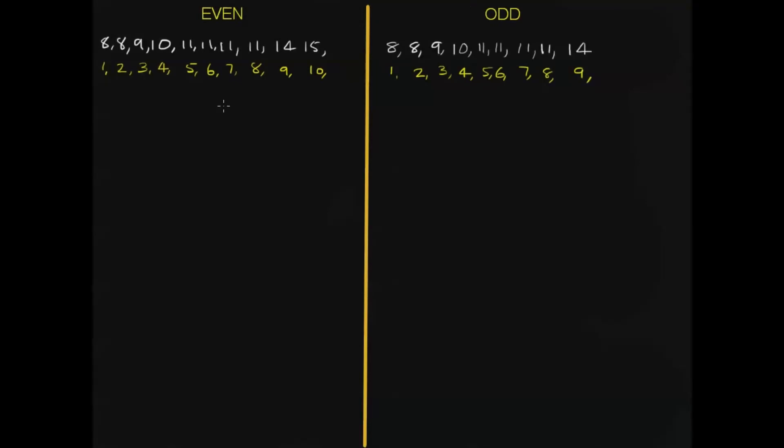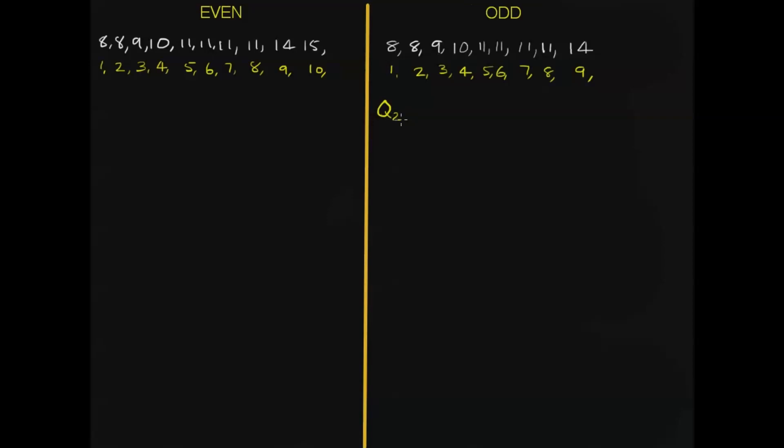I'll work with the odd numbers first because we've done these before, and then I'll show you how it's different with the even numbers. So firstly we have nine scores, and we want to find the median, or Q2.